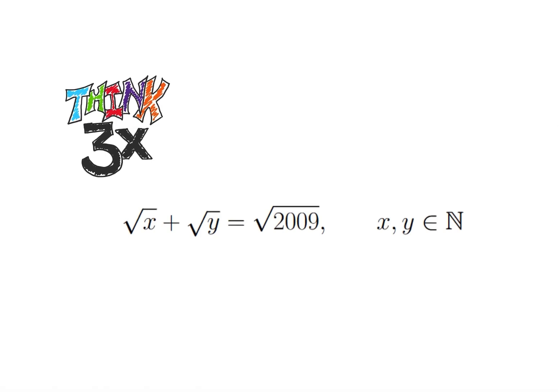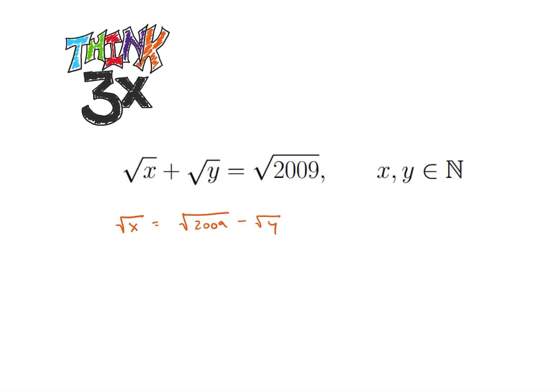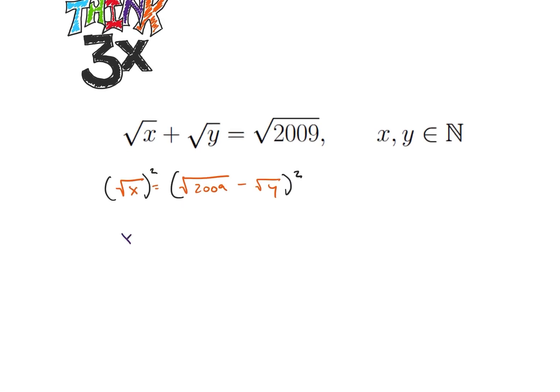So since we're dealing with natural numbers, it would be nice if I didn't have all these square roots in here, so we're going to try to figure out a way to get rid of some of those. And what we're going to do after a little trial and error is make square root of x equal to the square root of 2009 minus square root of y, and then we're going to go ahead and square both sides of our equation. So what that's going to do for us is we're going to get x is equal to 2009 minus 2 square root of 2009 times y plus y.